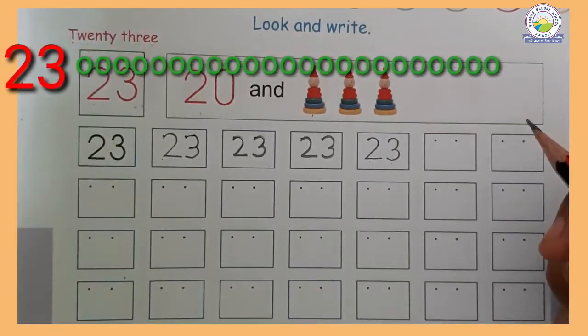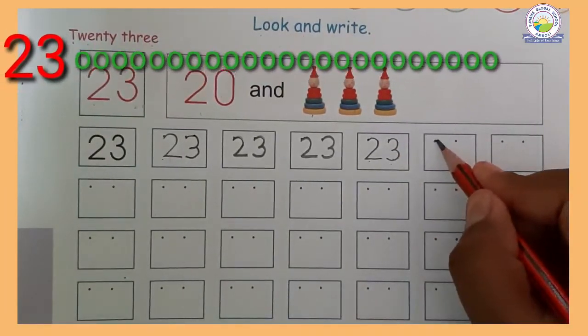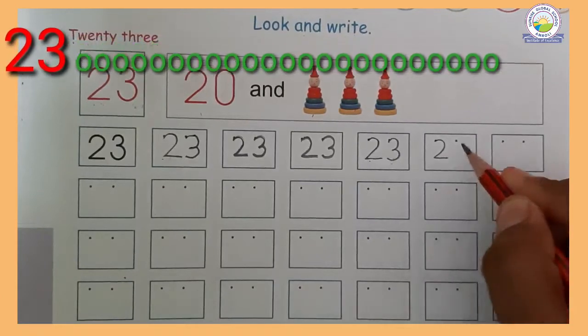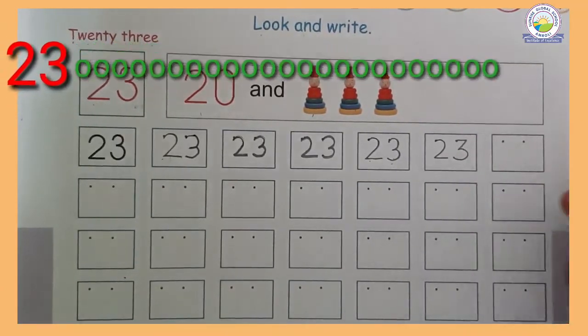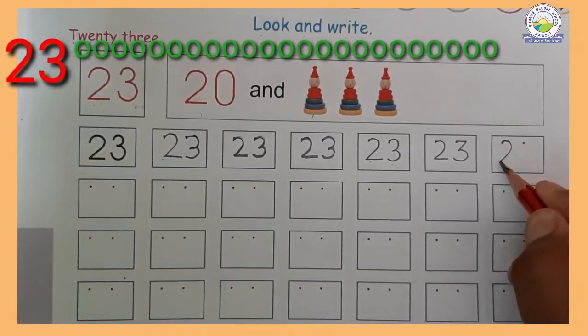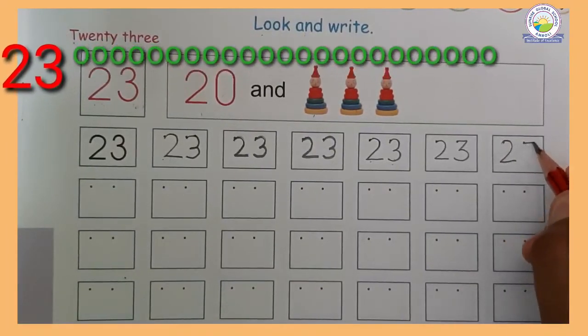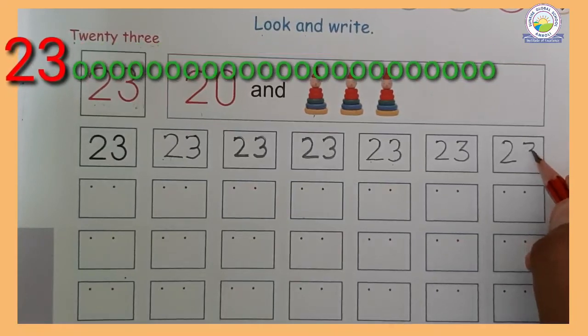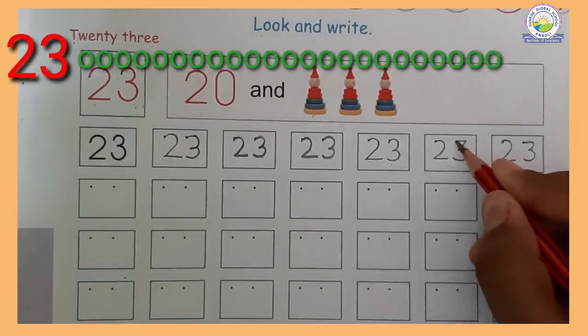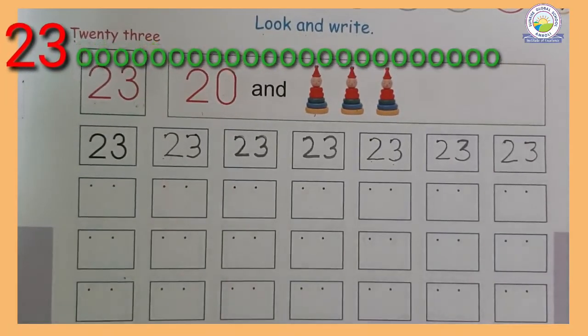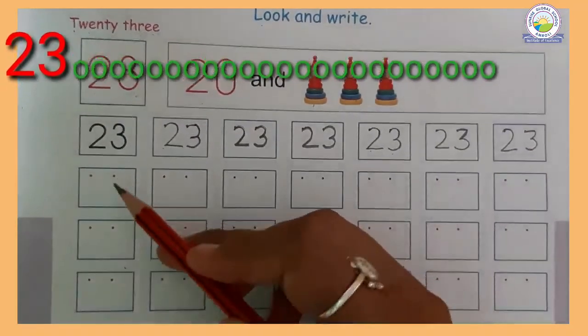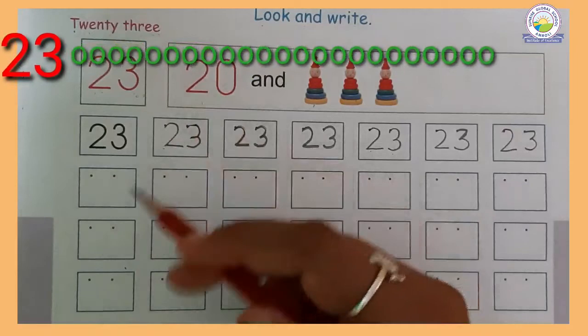Number 23. After 22, what number will come? Number 23. So like this you have to write. Like this you have to finish these 3 boxes. This is your homework.